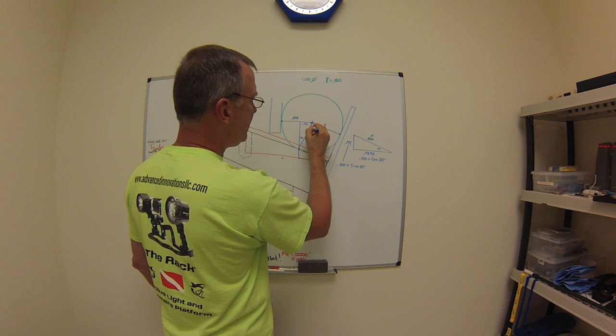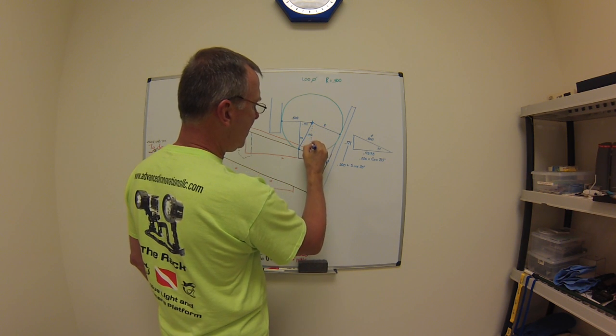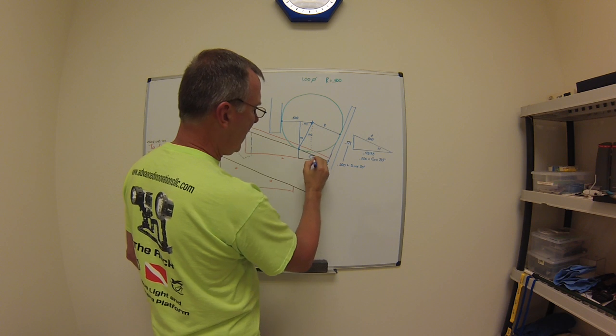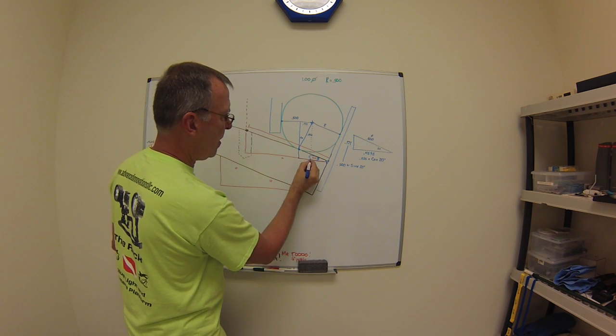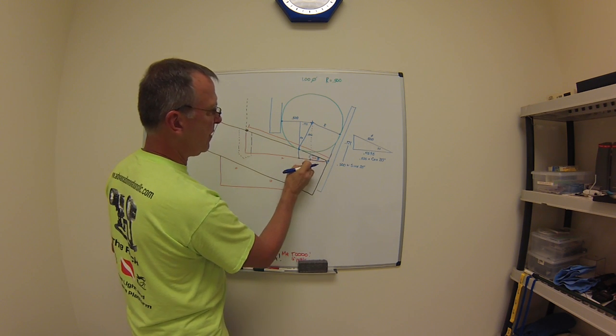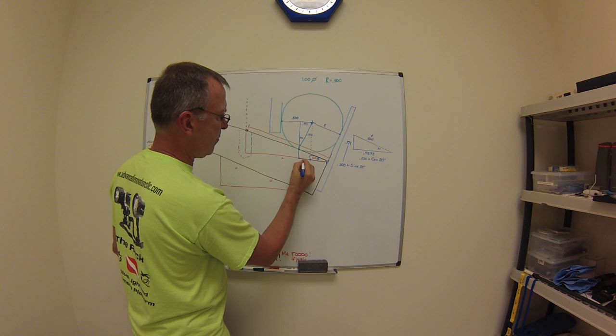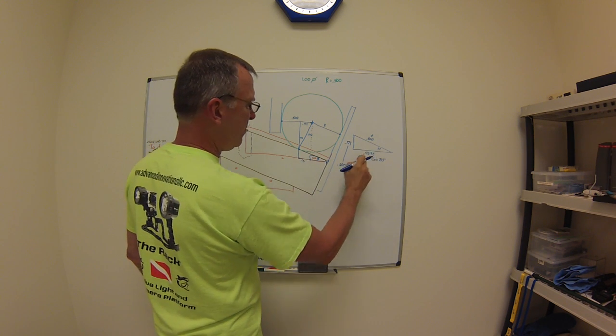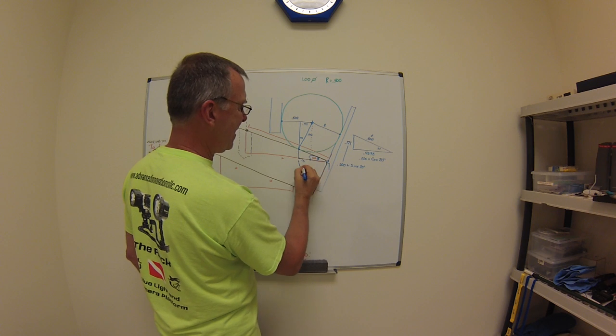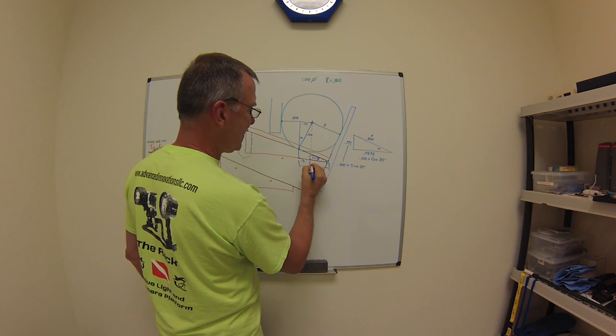And if you were to just make a dotted line down here, this little segment of the bottom triangle is also 171. But the whole thing is 469.8. So you know what this is.